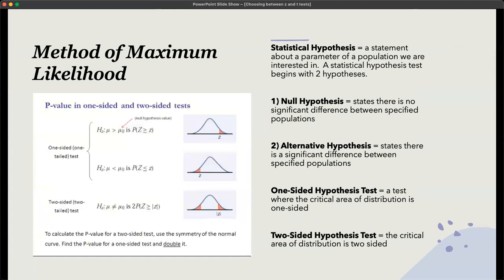Okay, so let's have a look at this here. We've got a little bit more vocabulary. Now remember that T tests are statistical hypothesis tests, and a statistical hypothesis is a statement about a parameter of a population we are interested in. A statistical hypothesis test begins with two hypotheses, and we've discussed this in the video on how to write your hypothesis statements.